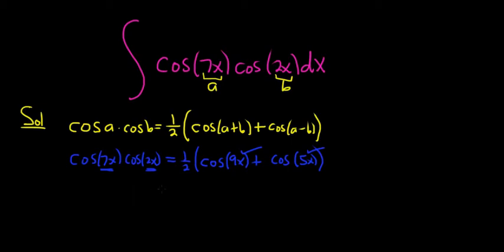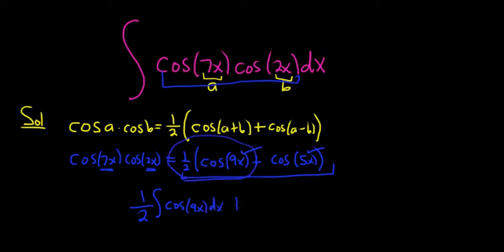Now all we have to do is rewrite our integral and integrate. All of this is equal to this. So we can go ahead and pull out the one-half, and we can break it up into two separate integrals. So it's one-half cosine 9x dx, that's the first one, plus one-half cosine 5x dx. That's the second one, distributing the one-half.